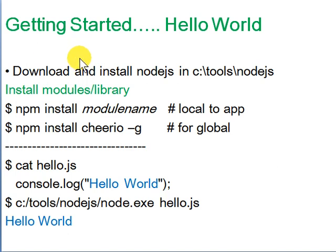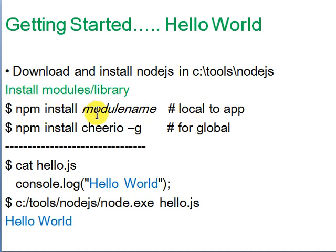To get started with Node.js, first download and install the Node.js package — it can be installed on Windows, and tools like SQL are available too. You then install modules using npm. Modules are like libraries: running 'npm install module-name' fetches it from the internet and installs it locally to the app in the folder you are working in.